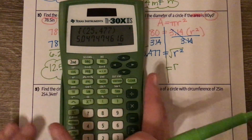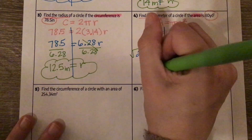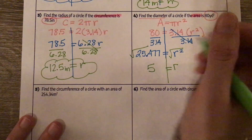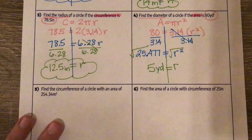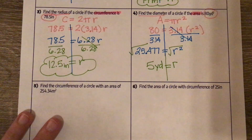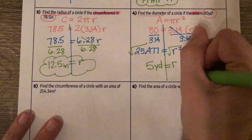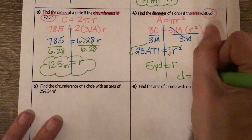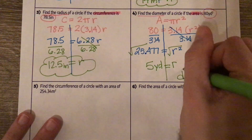I'm going to round that to about 5.0, or just 5, and we're talking about yards. Remember, we were solving for the diameter, so that's twice the radius. 5 times 2 is 10 yards.